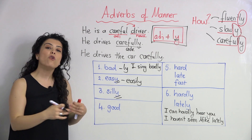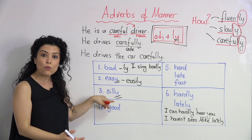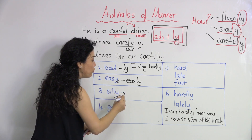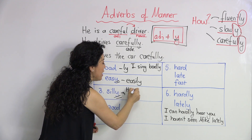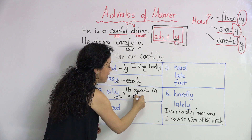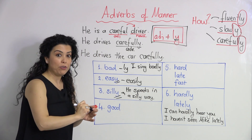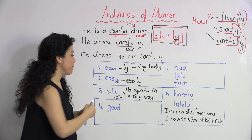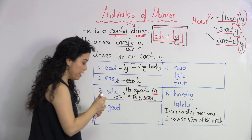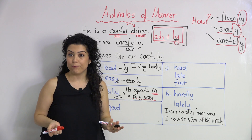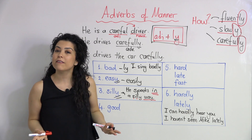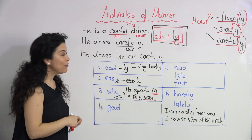When forming an adverb of manner with a word like 'silly,' you can't simply add -ly. Instead, you use a phrase: 'in a silly way.' Similarly, 'friendly' is an adjective, and you say 'in a friendly way.' For example: 'He speaks in a friendly way.' How does he speak? In a friendly way. Keep that in mind.